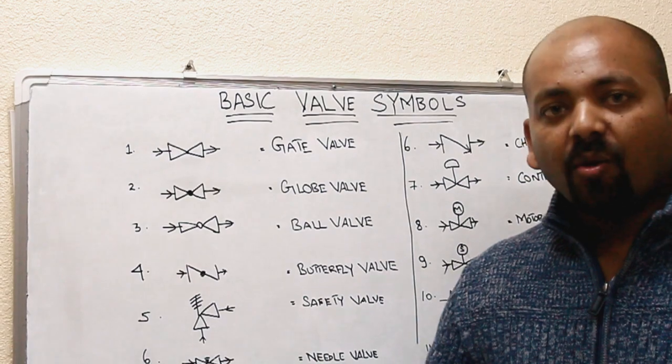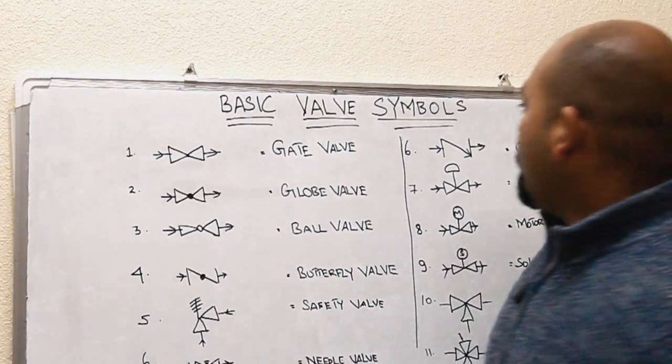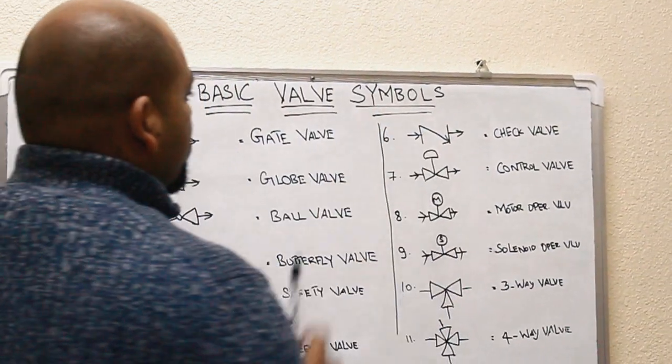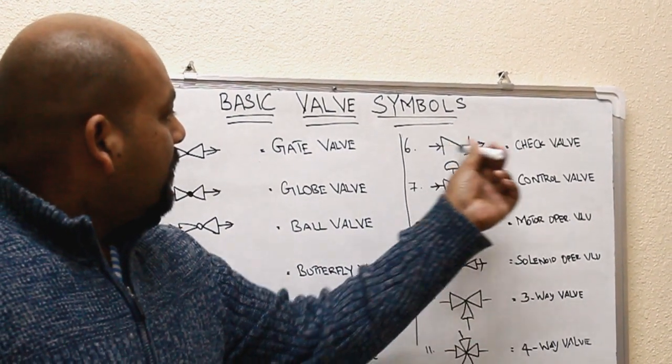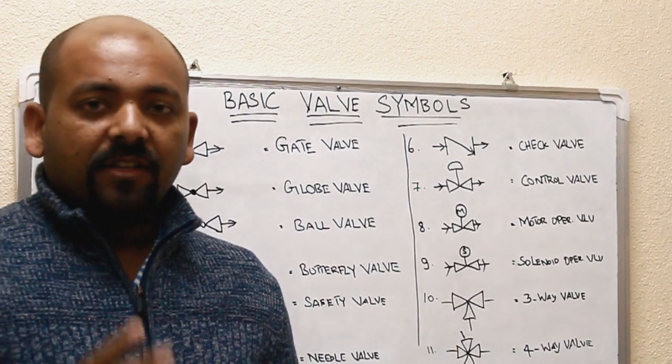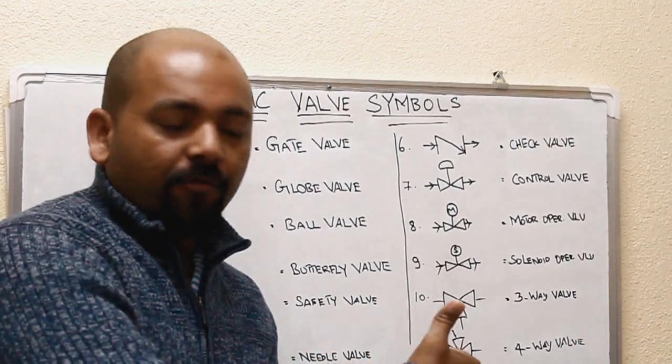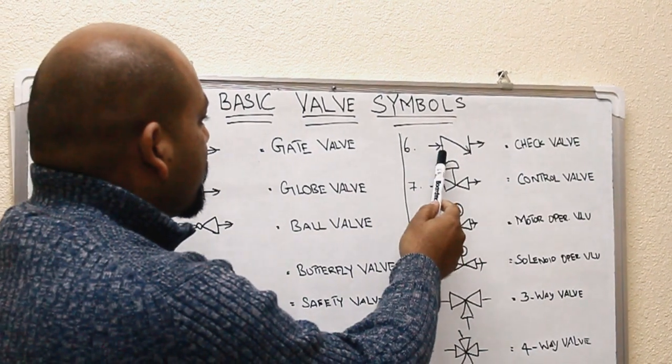And coming to the next valve is the check valve. The check valve will ensure there is only one flow, there won't be any back flow. The symbol of the check valve is like this.